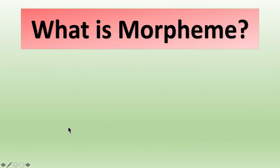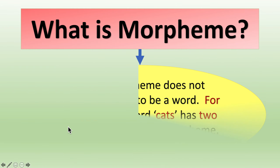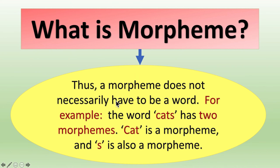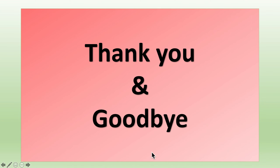Thus, a morpheme does not necessarily have to be a word. For example, the word 'cats' has two morphemes: 'cat' is a morpheme and 's' is also a morpheme.